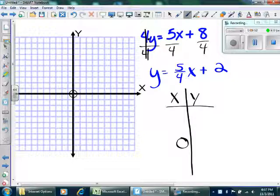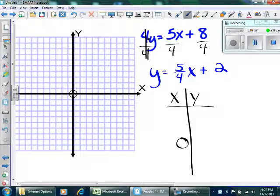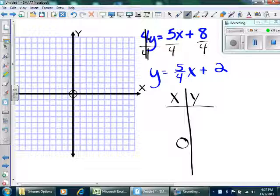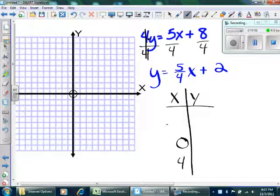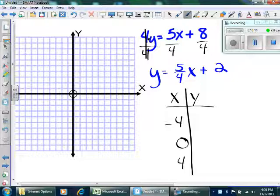Now, try and think to yourself, what might be some good choices for x besides 0? I hope you're coming up with 4 and negative 4. Why are they really good? Because the denominator is a 4, and I know 4 will divide evenly into negative 4, into 0, and into positive 4.